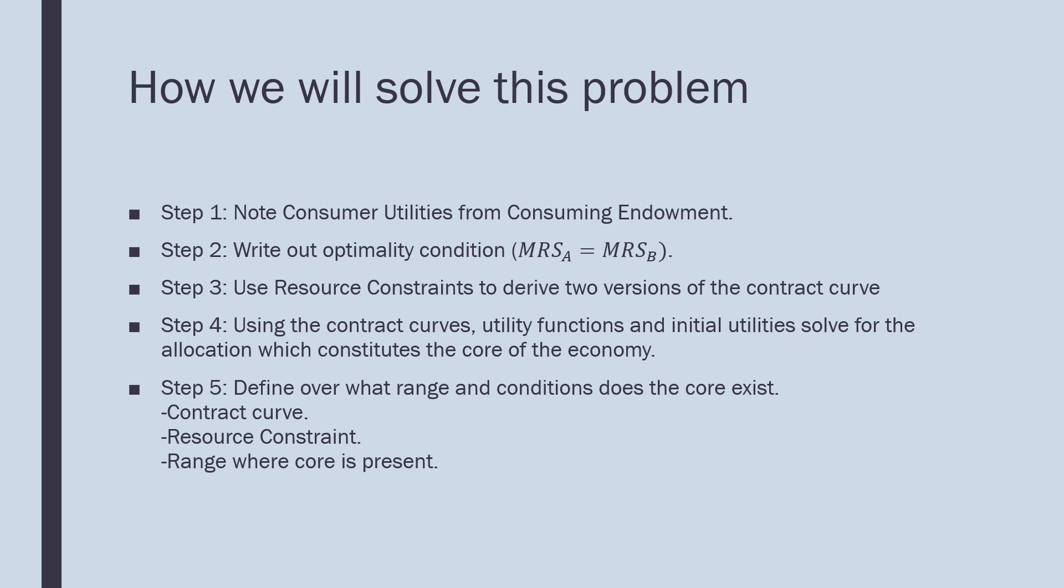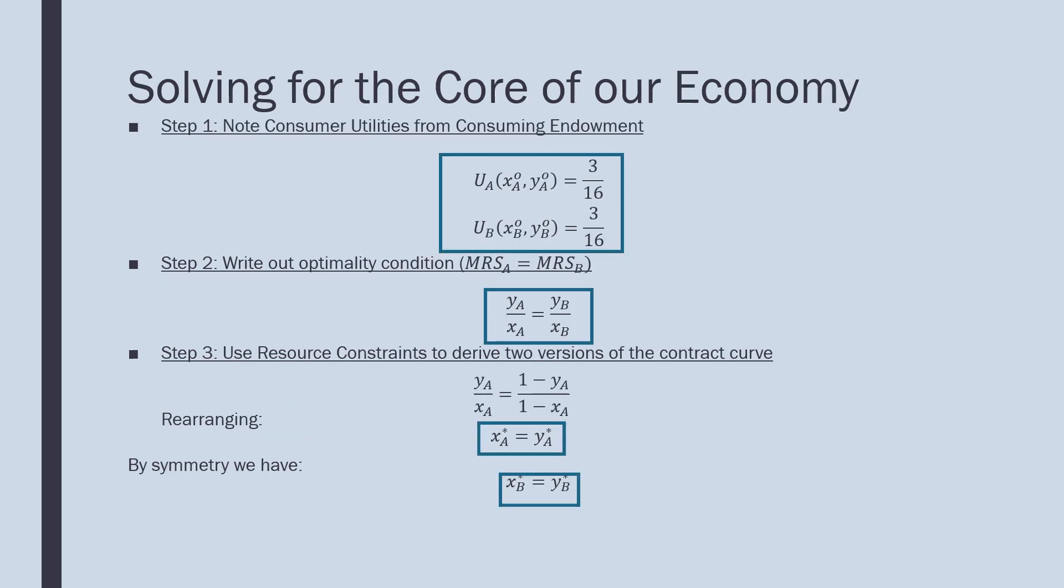Step 4: using these contract curves, utility functions, and initial utilities that we got in step 1, we solve for the allocation which constitutes the core of the economy. Step 5: define over what range does this core exist. This step will involve three parts: defining a contract curve, a resource constraint, and a range where the core is present.